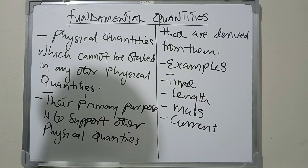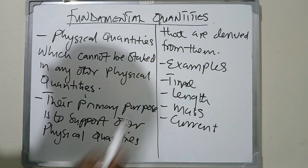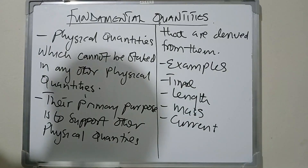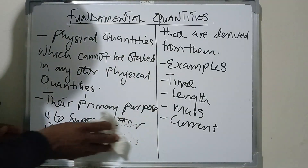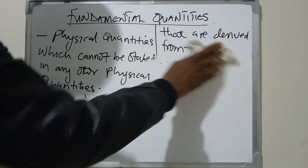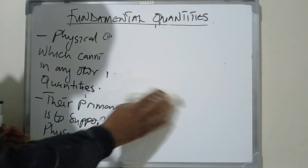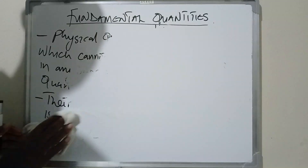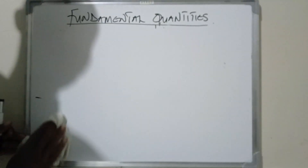Their primary purpose is to support other physical quantities that are derived from them. Examples of fundamental quantities are time, length, mass, and current. Let's look at the table of fundamental quantities so that we can properly understand the units.